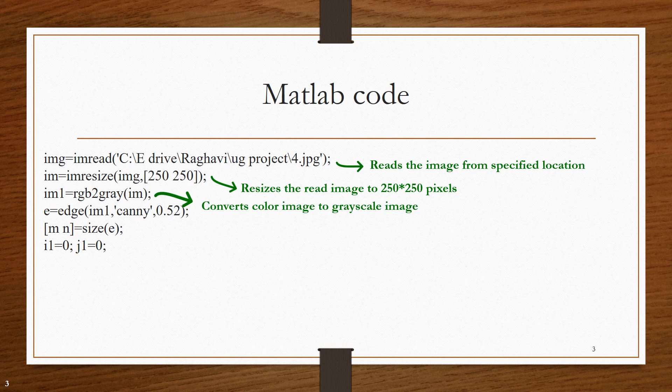This rgb2gray command is used to convert color image to a grayscale image. Processing a color image takes a long time and that is why we convert that into a grayscale image and then process it.